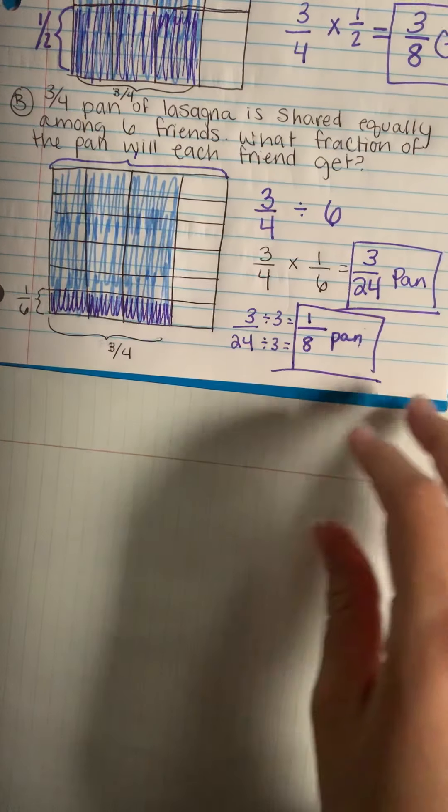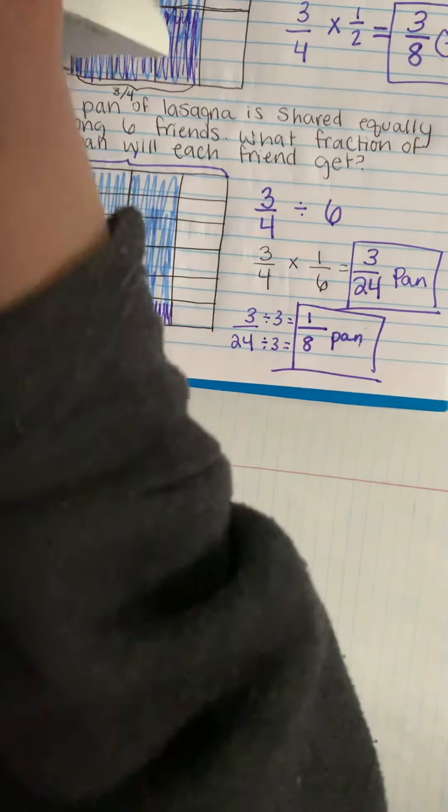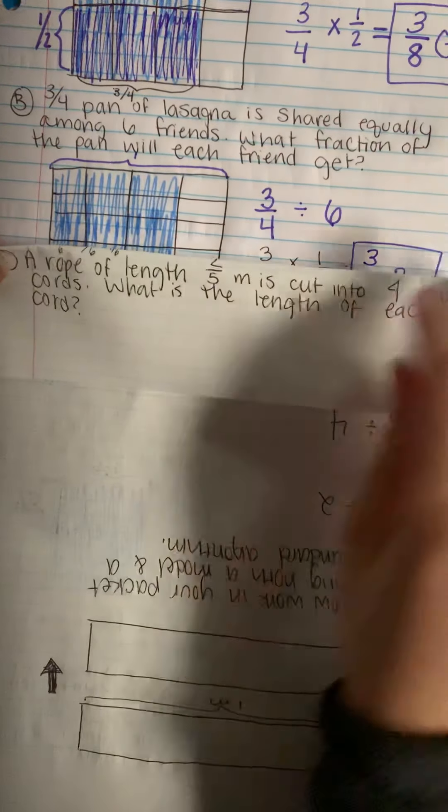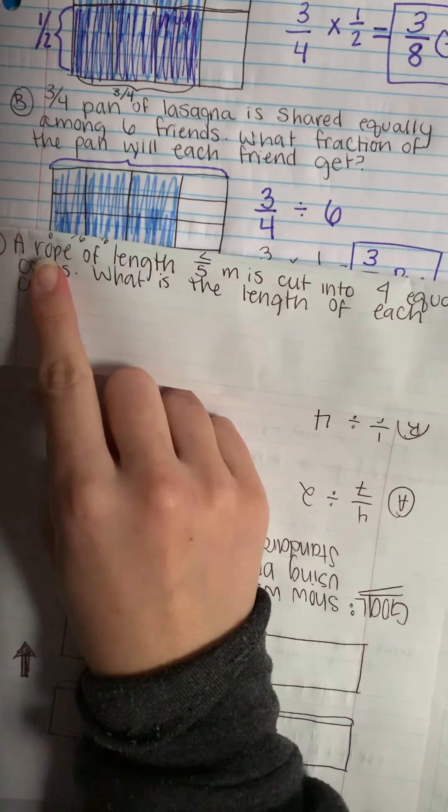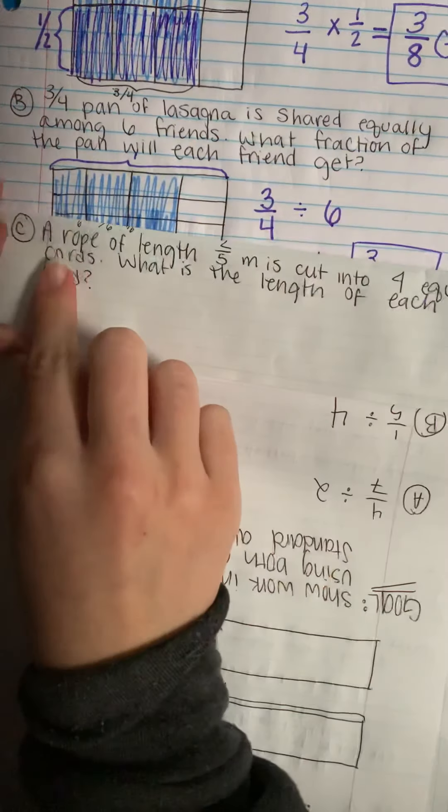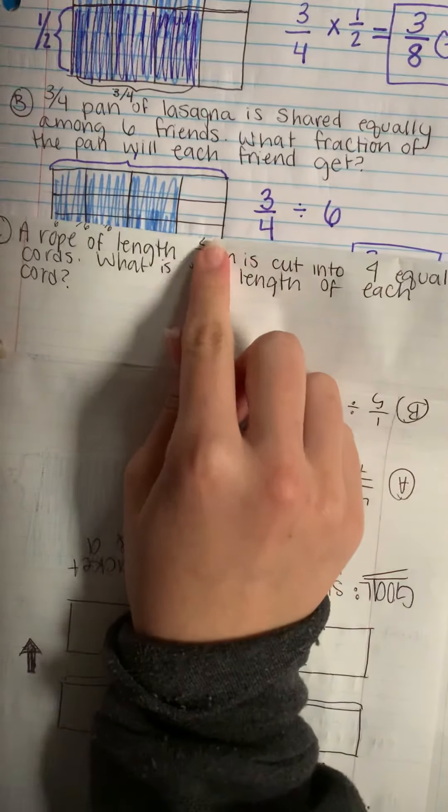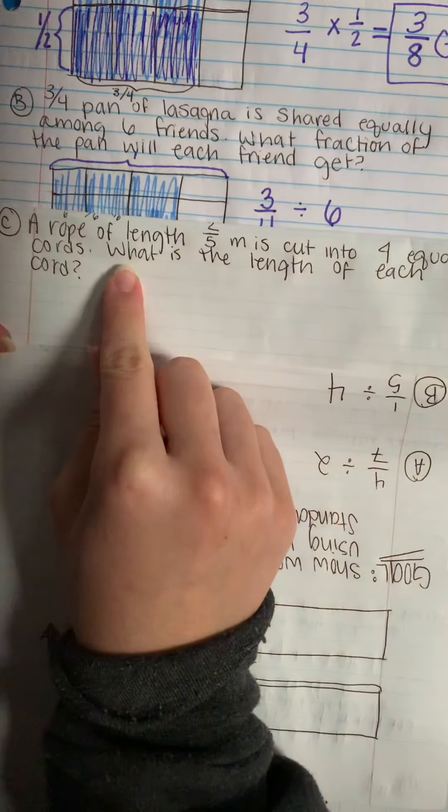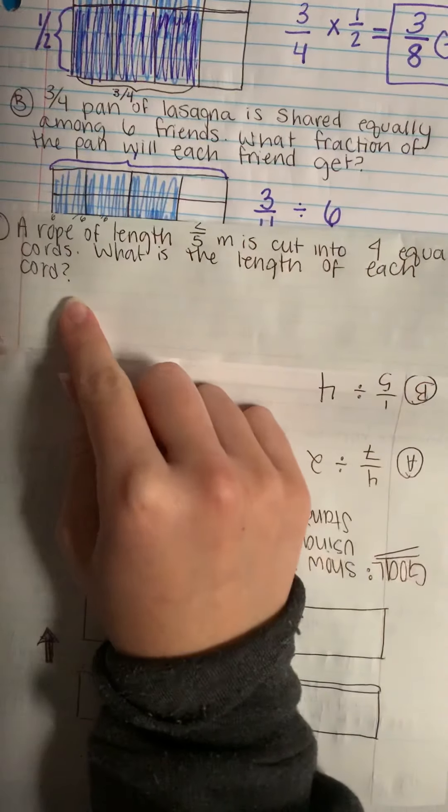And then we're going to do one more problem. So go ahead and write this problem. A rope, you can ignore these little sixes. It's from when I folded paper before. A rope of a length two over five meters is cut into four equal cords. What is the length of each cord?